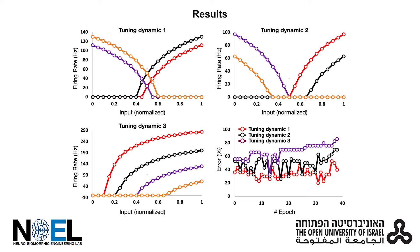First, we tested a 60-neuron reservoir system with three different input tuning modalities. We chose to use a learning rate of 0.002, shown later to be an efficient learning hyperparameter. These tuning curves represent different modalities often used to efficiently span a representation space neuromorphically.